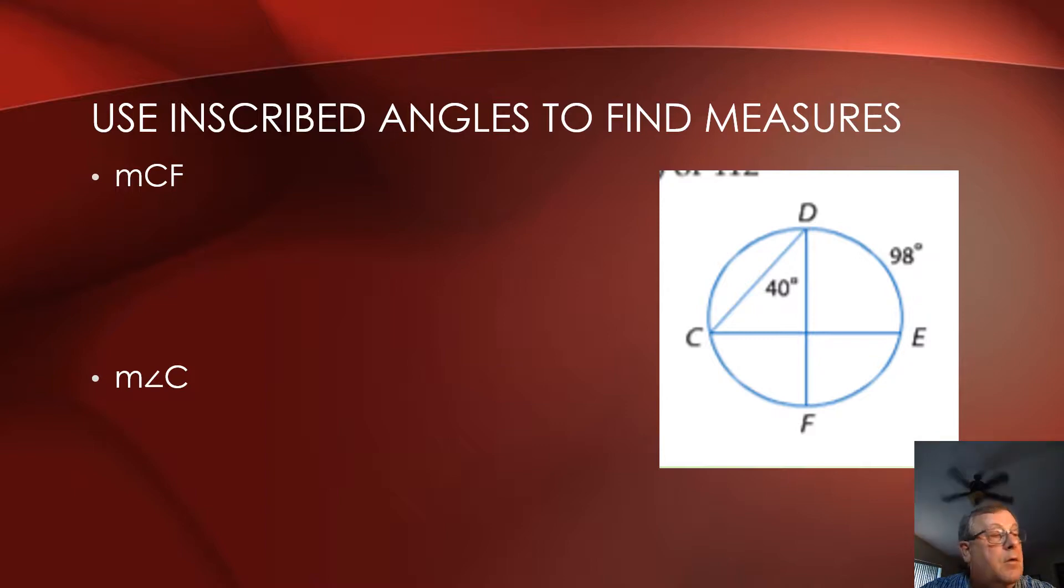Now, what is an inscribed angle? I'm glad you asked. An inscribed angle has its vertex on a circle and its sides are cords of the circle.